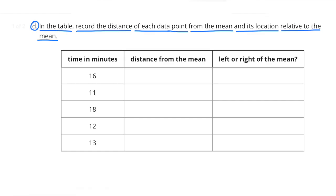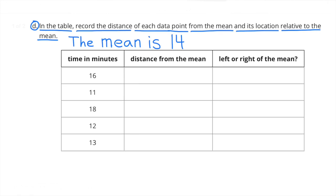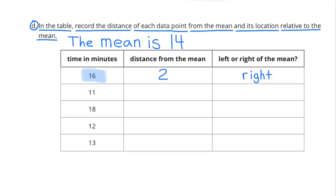Part D: In the table, record the distance of each data point from the mean and its location relative to the mean. The mean is 14. When the time in minutes is 16, the distance from the mean is 2, and it's to the right of the mean. When the time in minutes is 11, the distance from the mean is 3, and it's to the left of the mean.